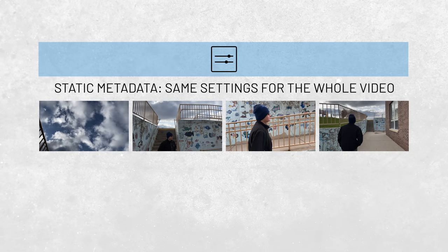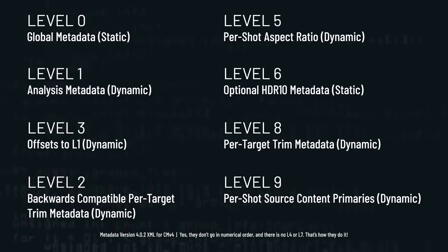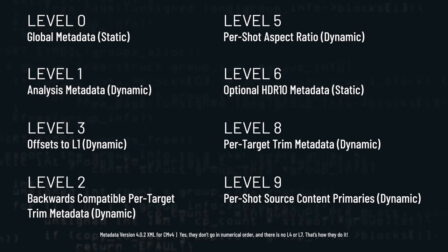Typically, an HDR video has a constant set of instructions — static metadata — that tell the display how it should present the video. This set of instructions applies to the whole video and doesn't change throughout the duration of the program. However, there are cases where certain attributes of HDR may need to be tailored for specific scenes. That's where Dolby Vision comes in. Dolby Vision provides additional instructions — dynamic metadata — that work alongside the video playback and help adjust the picture for different scenes, like brightness and contrast. Dolby Vision breaks down the metadata into eight levels, with different parameters that can be adjusted on a scene-by-scene or even frame-by-frame basis to truly leverage the capabilities of the HDR display and make the picture look stunning.